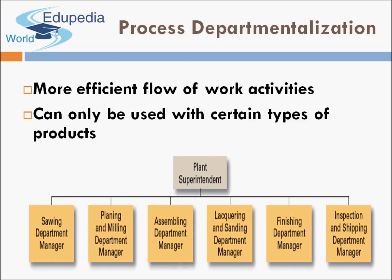Third is process departmentalization. Sometimes, the product being produced is very complex and goes through multiple stages. Depending upon the different stages through which the product goes, the entire organization is divided into different departments. For example, when a company produces a car, it goes through multiple phases — purchasing or manufacturing parts, then sending the car through different stages of production — and the organization is divided accordingly.